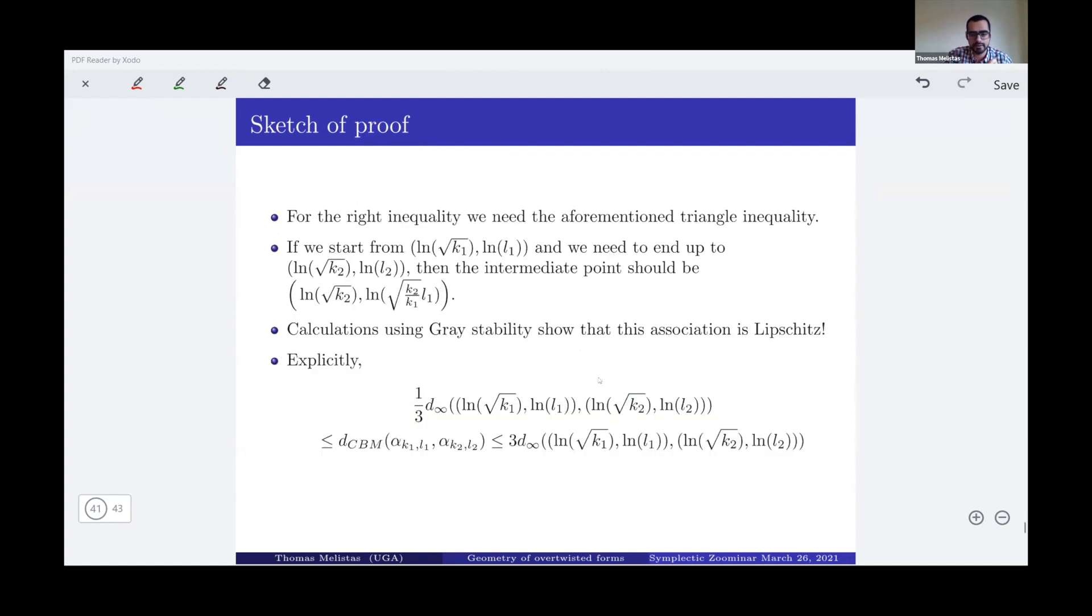So if I go from the point K_1 and L to the point ln of square root of K_2 and ln of L_2, then what I need to do, I need to pass through that point. Why is that? Because if I want to change my volume from K_1 to K_2, then I need to rescale my dynamics essentially by this number right here. Now calculations using Gray's stability theorem show that this association is Lipschitz and the explicit inequality looks like that. So I think, yeah, that was, thank you very much.